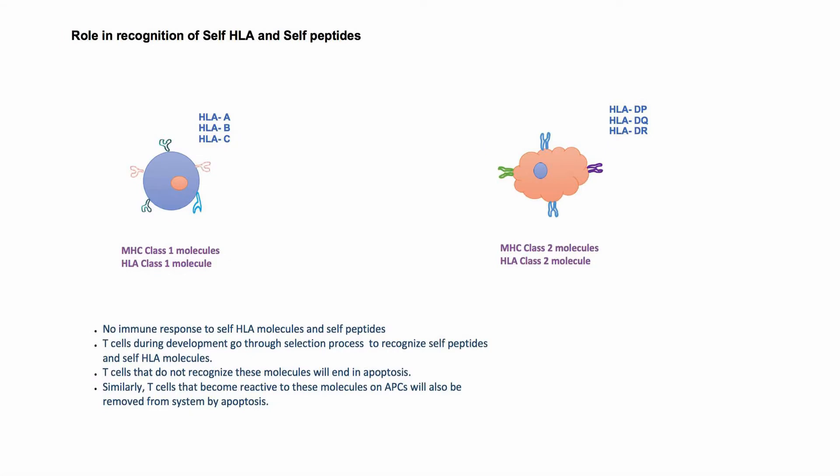One of the fundamental roles of HLA molecules is to provide identity of self to cells of the adaptive immune response. This is achieved during development of T cells. During their development, T cells are presented with self HLA molecules in combination with self peptides. Only those T cells that can recognize self HLA molecules in combination with self peptides will have further development.